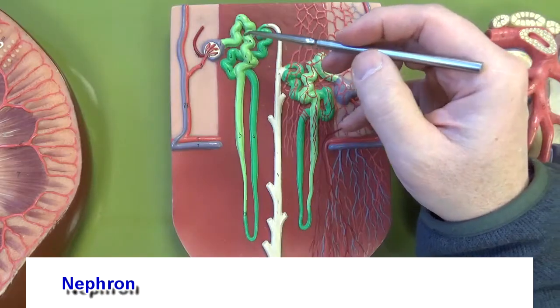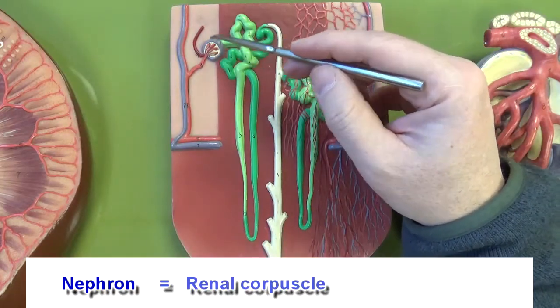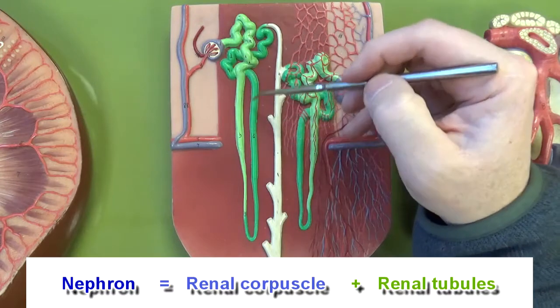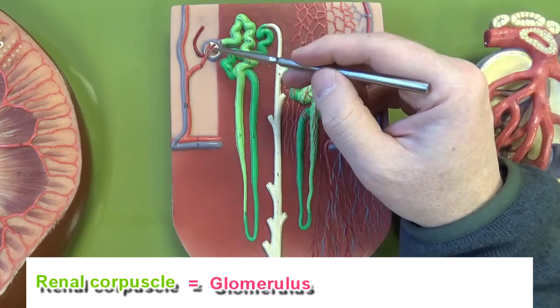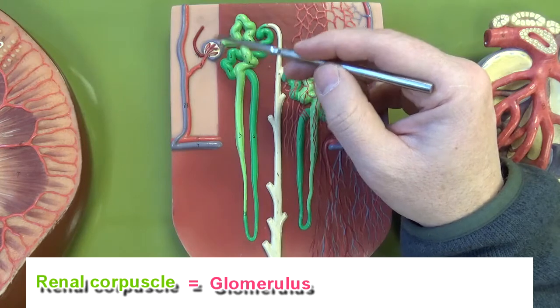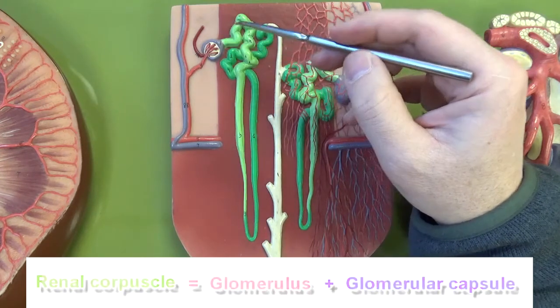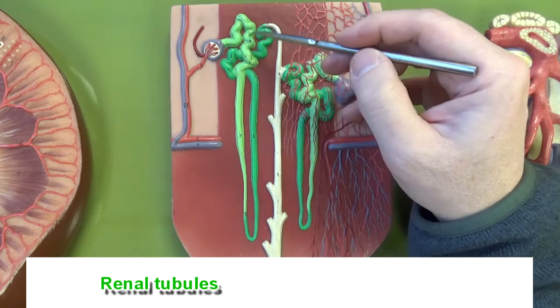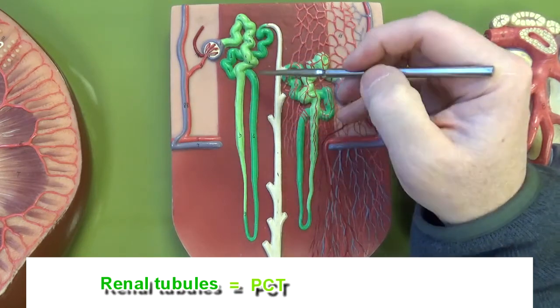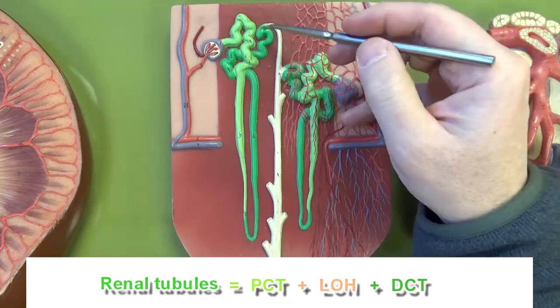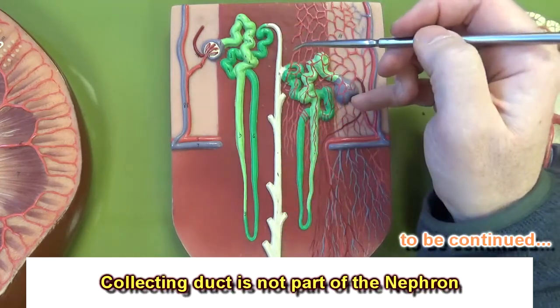The nephron consists of the renal corpuscle and the renal tubules. The renal corpuscle consists of the glomerulus or glomerular capillaries and the glomerular capsule or Bowman's capsule. The renal tubules consist of the proximal convoluted tubule, loop of Henle, and distal convoluted tubule. The collecting duct is not part of the nephron.